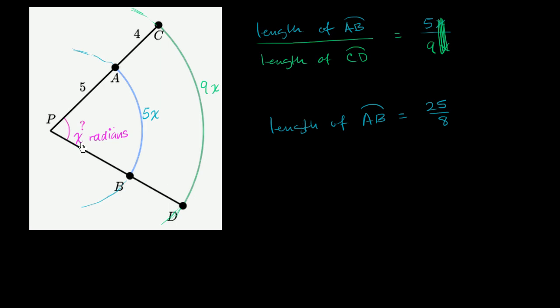Well, let's work through each of them. This arc length—we already figured out that AB's length is 5x. So we could just say that 5x is equal to 25 over 8. Divide both sides by 5. x equals 5 over 8. And so the measure of this angle right over here is 5 over 8 radians.